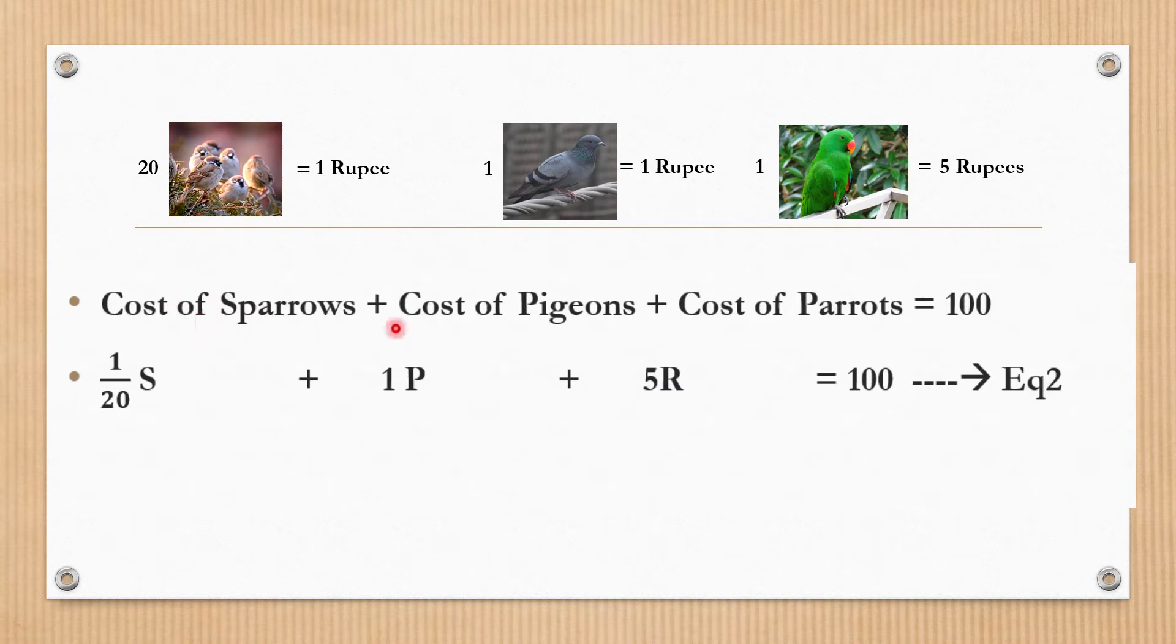The second equation shows the cost of the birds. For 20 sparrows, it's S/20. For 1 pigeon, 1 times P. For 1 parrot, 5 rupees, so 5 times R equals 100.